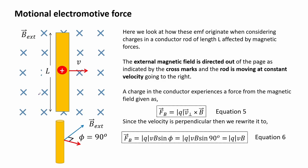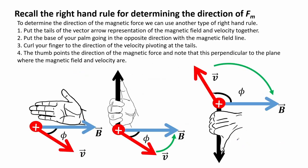We now look at how EMF originates when considering charges in a conductor rod of length L affected by magnetic forces. The external magnetic field is directed out of the page and the rod is moving at constant velocity to the right. A charge in the conductor experiences a force from the magnetic field given as equation 5, and since the velocity is perpendicular we rewrite it as equation 6. Using the right hand rule — put the tails of the magnetic field and velocity vectors together, place the base of your palm opposite to the magnetic field line, curl your fingers in the direction of velocity, and the thumb points the direction of the magnetic force, which is perpendicular to the plane containing B and V.